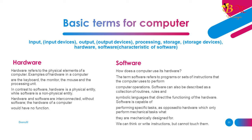Hardware refers to the physical elements of a computer. Examples of hardware include the keyboard, the monitor, the mouse, and the processing unit. In contrast to software, hardware is a physical entity, while software is a non-physical entity. Hardware and software are interconnected — without software, the hardware of a computer would have no function.